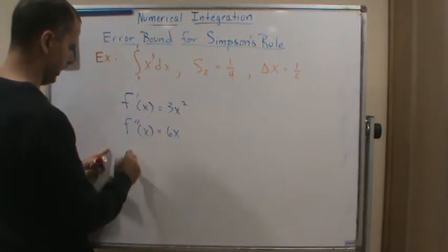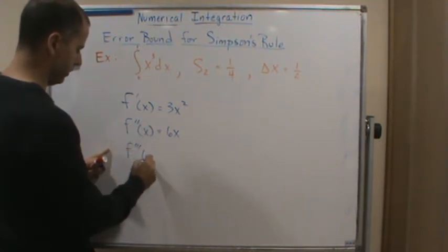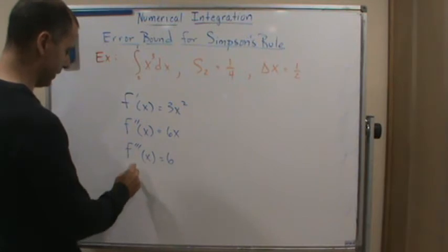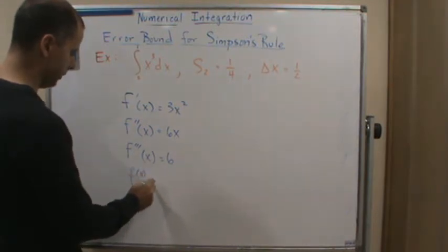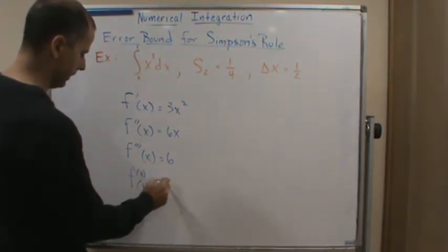And the third derivative is equal to 6. Well, what does that mean? The fourth derivative is 0.